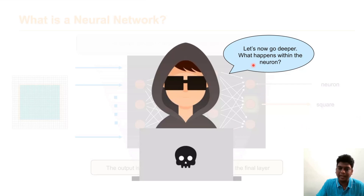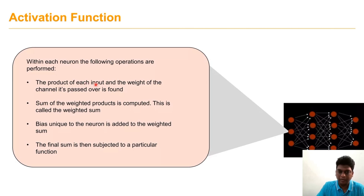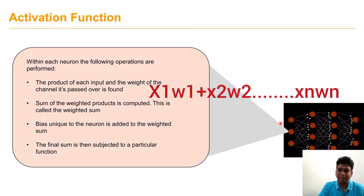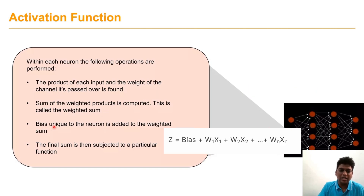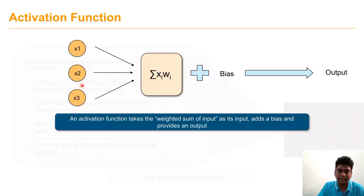Now we find out what happens inside these neurons, which are the layers between the input and output layers. First, it takes the product of every input data with an assigned weight — w1, w2, etc. Then the sum of the weight products is computed: x1·w1 + x2·w2 + ... + xn·wn. This weighted sum is added with the bias element. Finally, this sum is subjected to an activation function. For example, with three inputs x1, x2, x3: x1·w1 + x2·w2 + x3·w3 + bias, and then we predict the output.